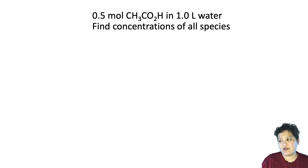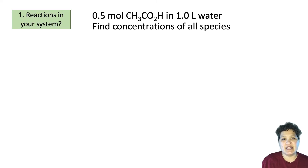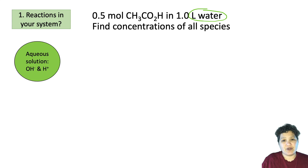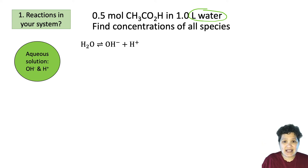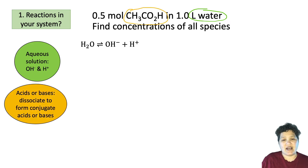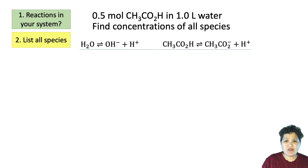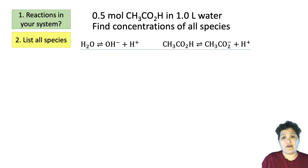The first thing we have to think about is what sort of reactions might be happening. We have an aqueous system because we diluted with water, so we include the dissociation of water as a reaction. Since it's acetic acid, we also have acid dissociation: acetic acid dissociating to form a proton and acetate. From these reactions we can list all of the species by going through each reaction and identifying what's present.